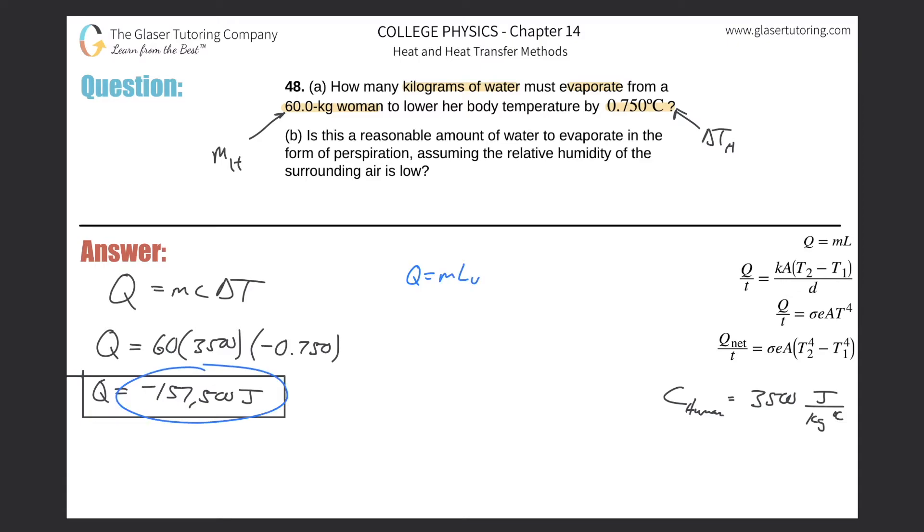Part two is basically now Q is equal to ML sub V. So we know the heat energy change. You can leave it as negative if you want. It really doesn't matter. But if you leave this negative, then you want to plug this in as a negative just so it makes sense. You can also plug this just in as a positive, actually, because technically whatever is being lost by the body is then being gained by this water in order to evaporate it. So that's technically the right way to do it.